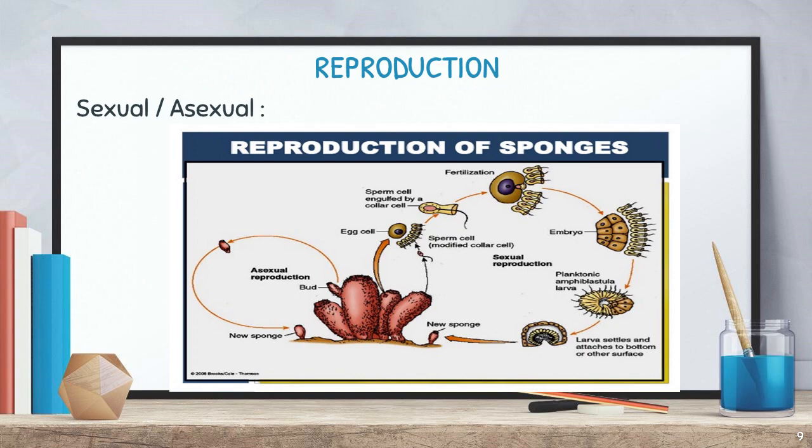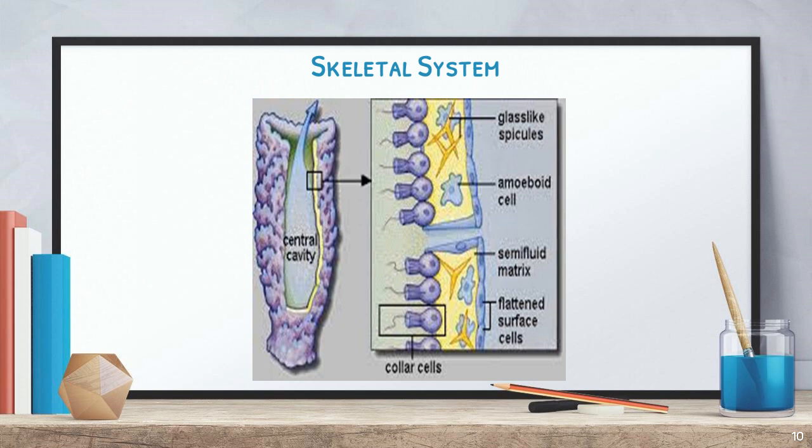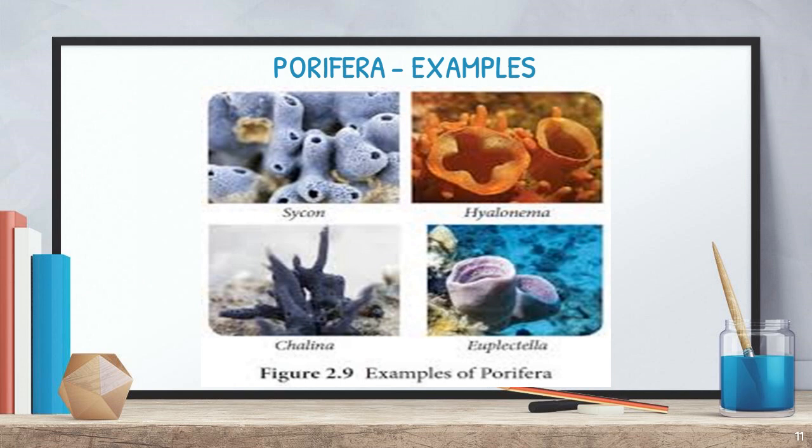The skeletal system of Porifera consists of glass-like spicules on the outer surface of the sponge body wall, providing support. Examples of phylum Porifera include Sycon, Hyalonema, Calcina, and Euplectella.